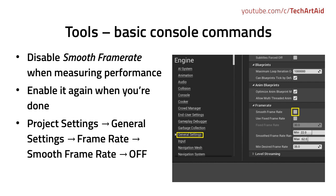Now to measure all this accurately, we have to go into Project Settings, General Settings, Frame Rate, and disable Smooth Frame Rate. Smooth Frame Rate tries to avoid spikes and rounds the number to more specific values like 30 or 60 FPS. By disabling it we can end up with much more accurate measurements.